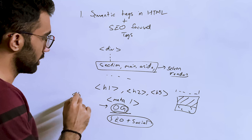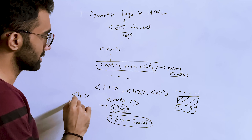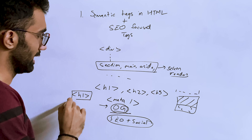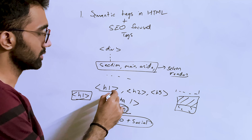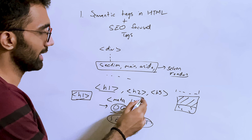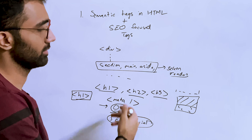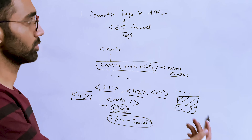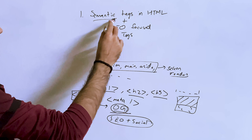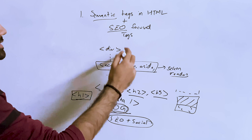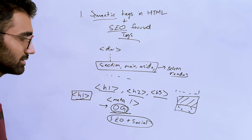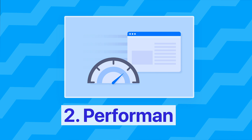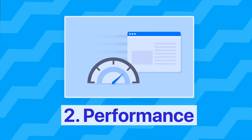When you write with h1, Google considers that the main heading of the page. Your most important headings should be h1 and h2, then h3 and so on in order. So having this semantic understanding plus an SEO-focused understanding of tags in HTML is an important concept.